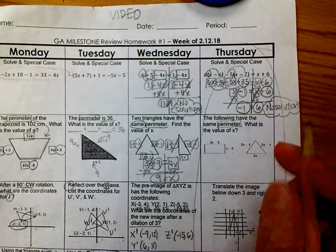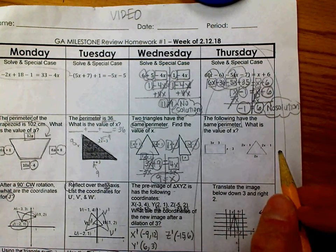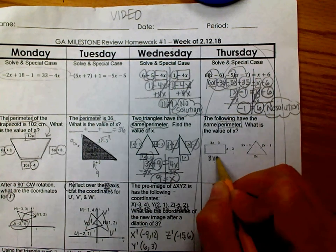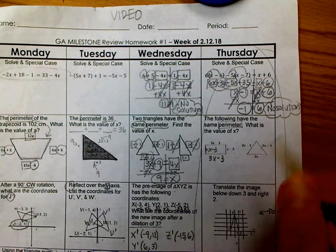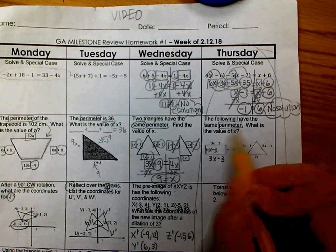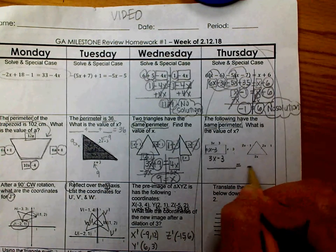Okay, so I am going to put the 3x minus 3 here. And for this side, x minus 3, since I don't have room on that side. And I know that they have the same perimeter, which means equal. So, I'm going to put one side equal to the other side.